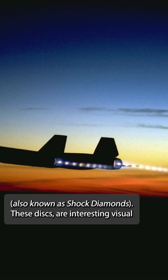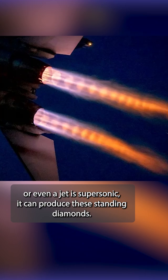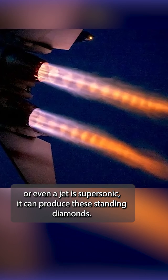This is a Mach disk, also known as shock diamonds. These disks are interesting visual representations of some pretty complex fluid dynamics. When the exhaust from a rocket, afterburner, or even a jet is supersonic, it can produce these standing diamonds.